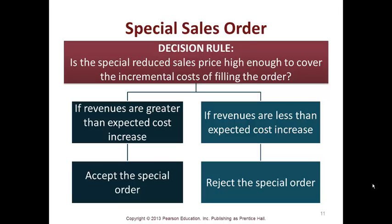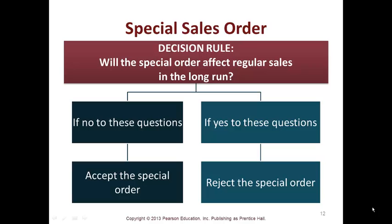Decision rule two: is the special reduced sales price high enough to cover the incremental cost of filling the order? If revenues are greater than cost, accept the order. If revenues are less, don't do it — why take a special order if it costs more than you make? Decision rule three: will the special order affect regular sales in the long run? If no, accept; if yes, reject.